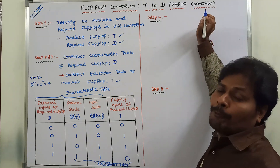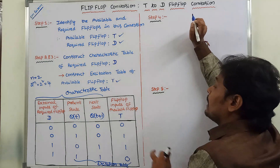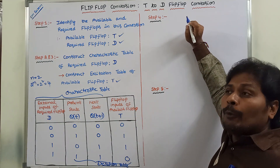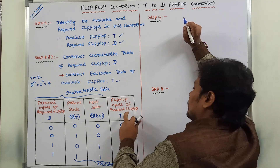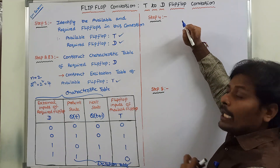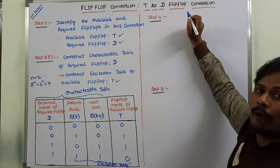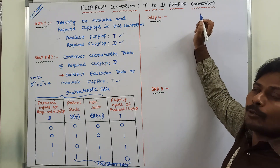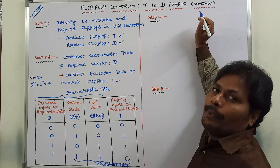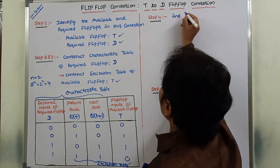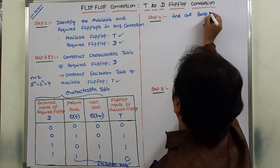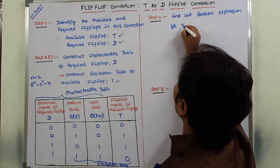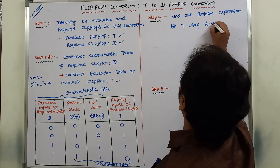In step 4, we have to find the Boolean expression for T. To find the Boolean expression for T, we use a Karnaugh map. Since the first two columns have two input variables — D and Q(t) — we use a 2-variable Karnaugh map to find the Boolean expression for T.